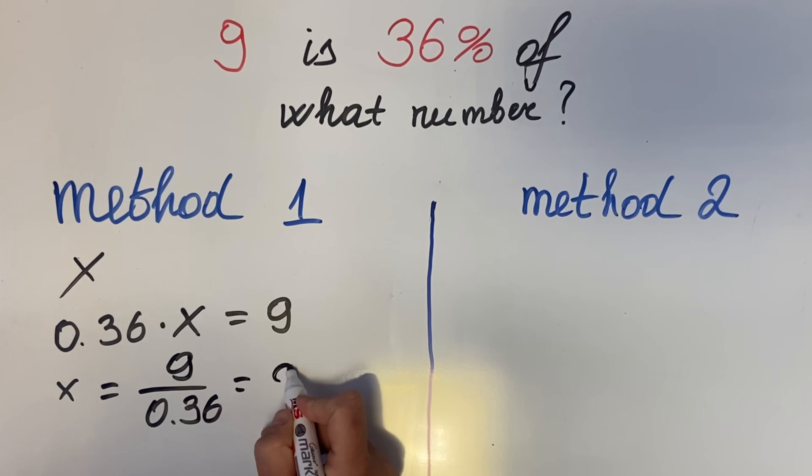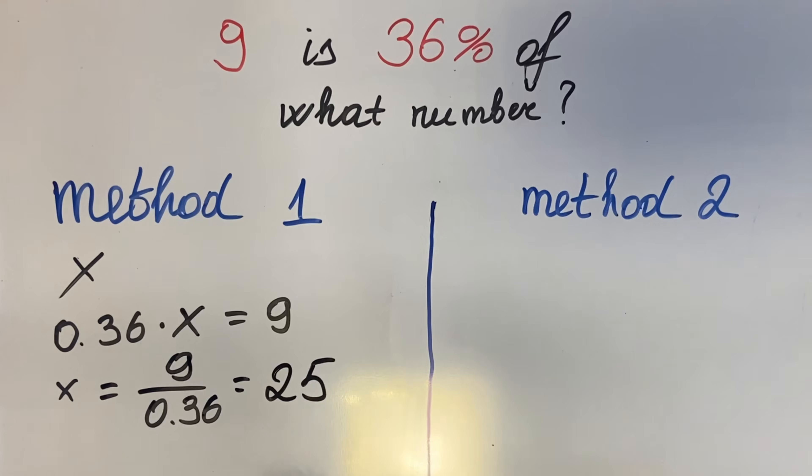And that equals 25. You can use a calculator because the point of this equation is not how to divide by decimals. So the first method: you identify the number you need to find as x, convert the percentage to decimals, create this equation, and then do the simple division to find x. The number is 25.